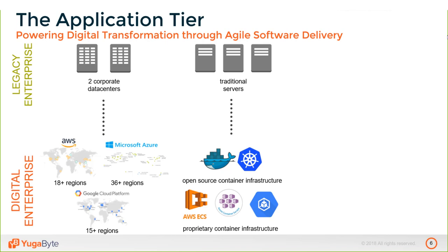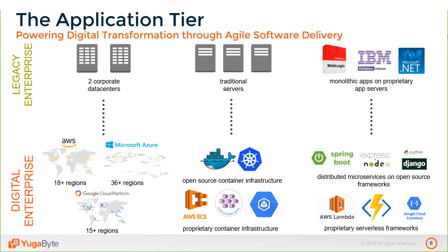Public cloud providers are offering their own container management services, and open source solutions based around containers and Kubernetes are bringing high amounts of efficiency to app building and deployment. Similarly at the higher application stack levels, there's a move from legacy monolithic or proprietary application servers to open-source frameworks like Express, Spring, and Django that make application building much easier.